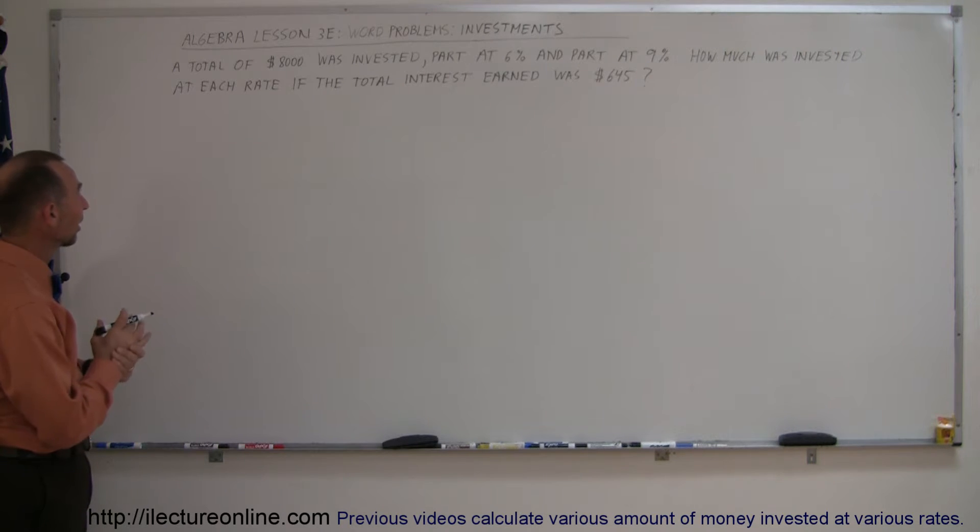The example here says a total of $8,000 was invested, part at 6% and the other part at 9%. How much was invested at each rate if the total interest earned was $645?